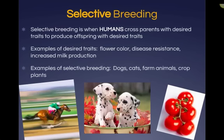Selective breeding is any time humans cross parents with desired traits to produce offspring with those same desired traits. For example, we might try to get a specific color of flower, integrate disease resistance into a crop we are growing, or increase milk production in our cows. We can breed different organisms together to try to get those desired traits. Examples include dogs — creating combinations like a puggle or a labradoodle. We also see this with farm animals and crops. For example, racehorses are constantly selectively bred to try to produce a faster organism.